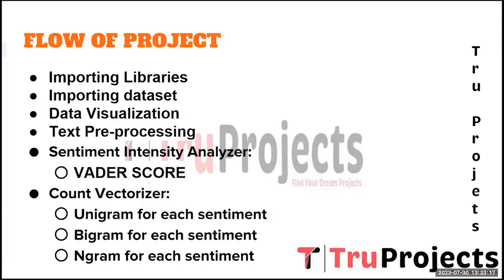The next step is Bigram for each sentiment. Bigram, on the other hand, considers pairs of consecutive words as features. It groups adjacent words together to form more meaningful units. For instance, in a review containing 'amazing experience', the bigram feature would be 'amazing experience'. By utilizing bigram features, the sentiment dynamics and context arising from certain word combinations lead to a more nuanced analysis of the sentiment conveyed in the review.